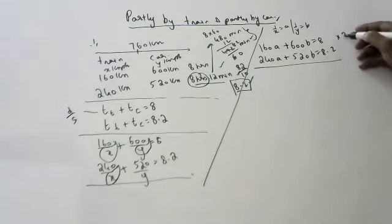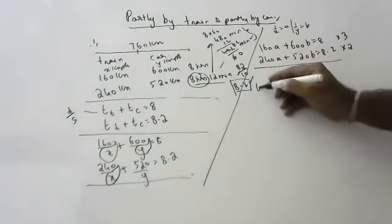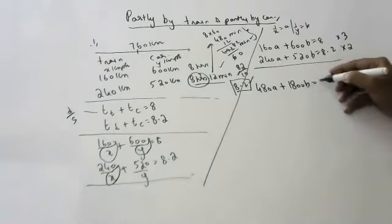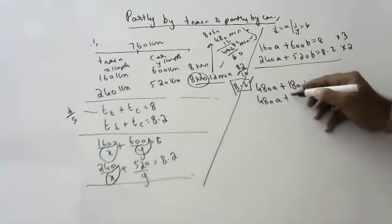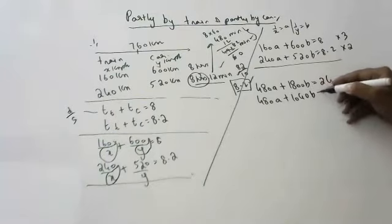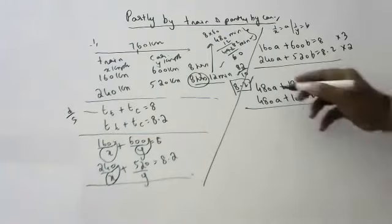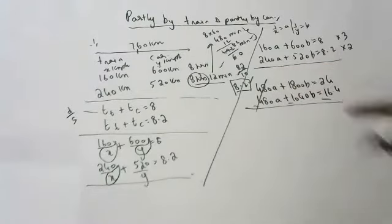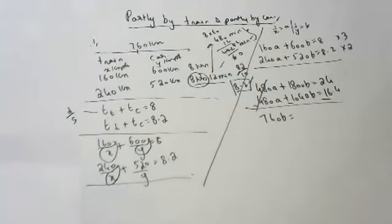To eliminate A, multiply the first equation by 3 and the second by 2. This gives: 480A plus 1800B equals 24, and 480A plus 1040B equals 16.4. Subtracting, 1800B minus 1040B equals 760B equals 24 minus 16.4, which is 7.6.